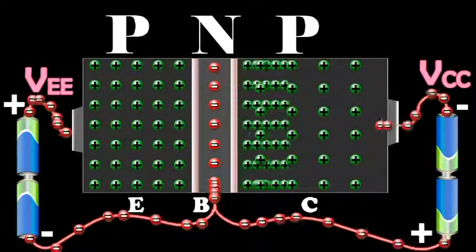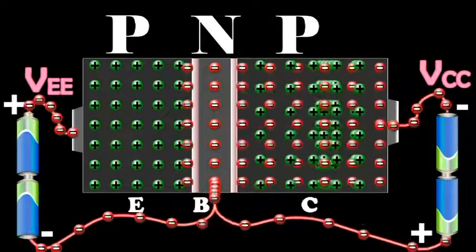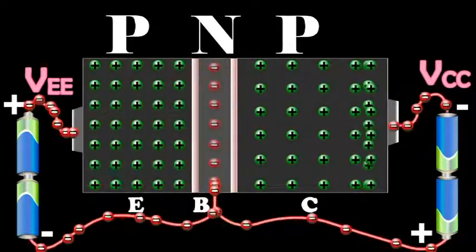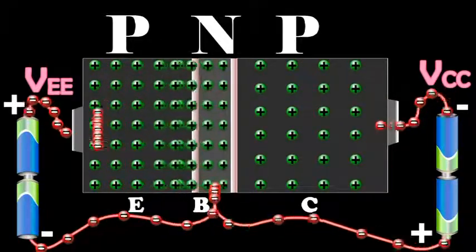In the external circuit, it is due to the flow of electrons from the negative terminal of the battery VCC into the collector.